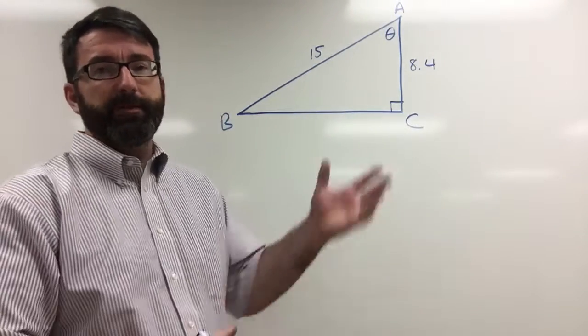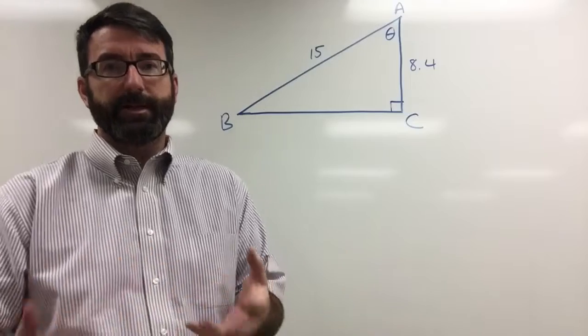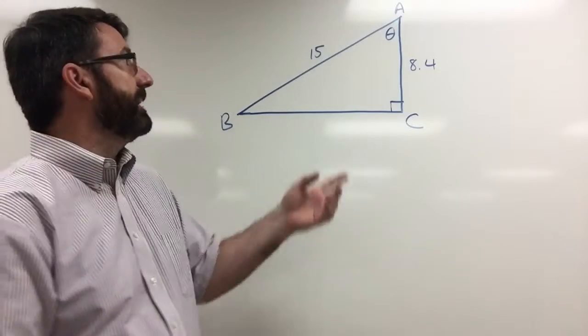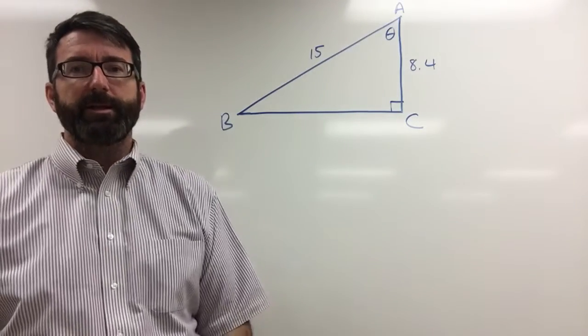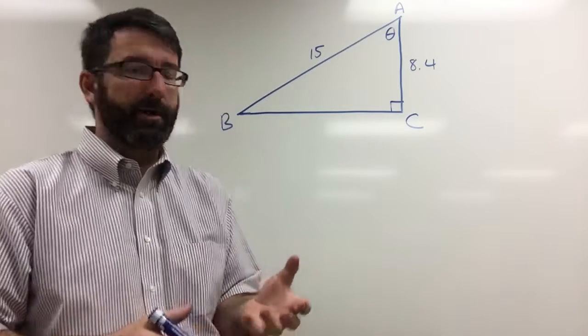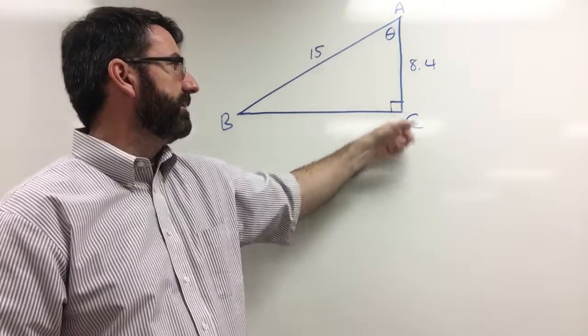For this problem we're given this triangle and asked to find the measure of the angle indicated. The angle indicated is this angle here that is labeled theta. Now we know that this is a right triangle because of this little square here in angle C.